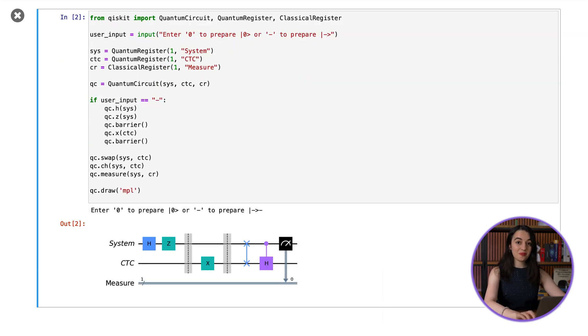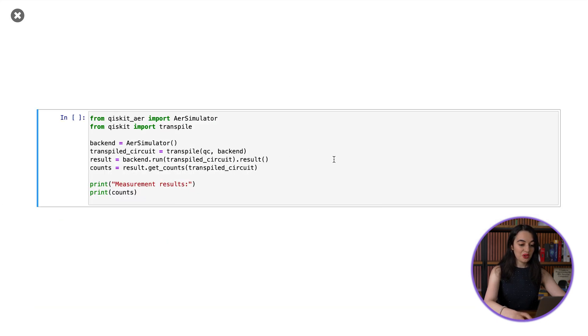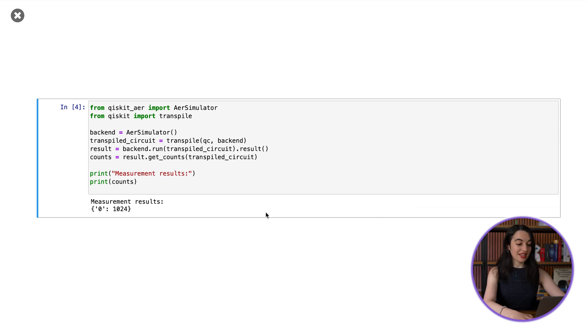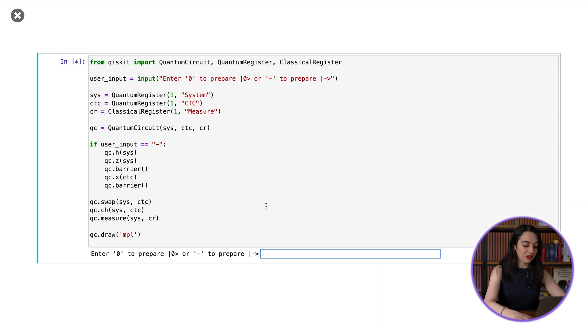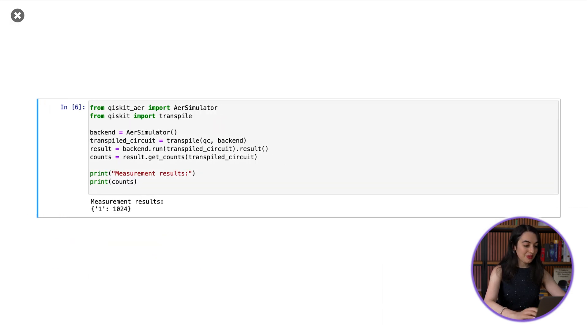Now, if the user inputs minus, then my code applies a Hadamard and Z to the system qubit to prepare it in the |-⟩ state and an X gate to the time loop qubit to prepare it in the |1⟩ state, which is the state needed to satisfy the consistency condition when the input is minus. I have artificially introduced the non-linearity into the quantum circuit by making the preparation of the time loop qubit depend on the input state, which in a real time loop would automatically be self-consistent. So let's run this for an input of zero and an input of minus. When we run it for an input of zero, we see that we always get an outcome of zero. And if we run it for an input of minus, then we always get an outcome of one. So the time loop allows us to perfectly distinguish the |0⟩ state from the |-⟩ state, even just with a single measurement.